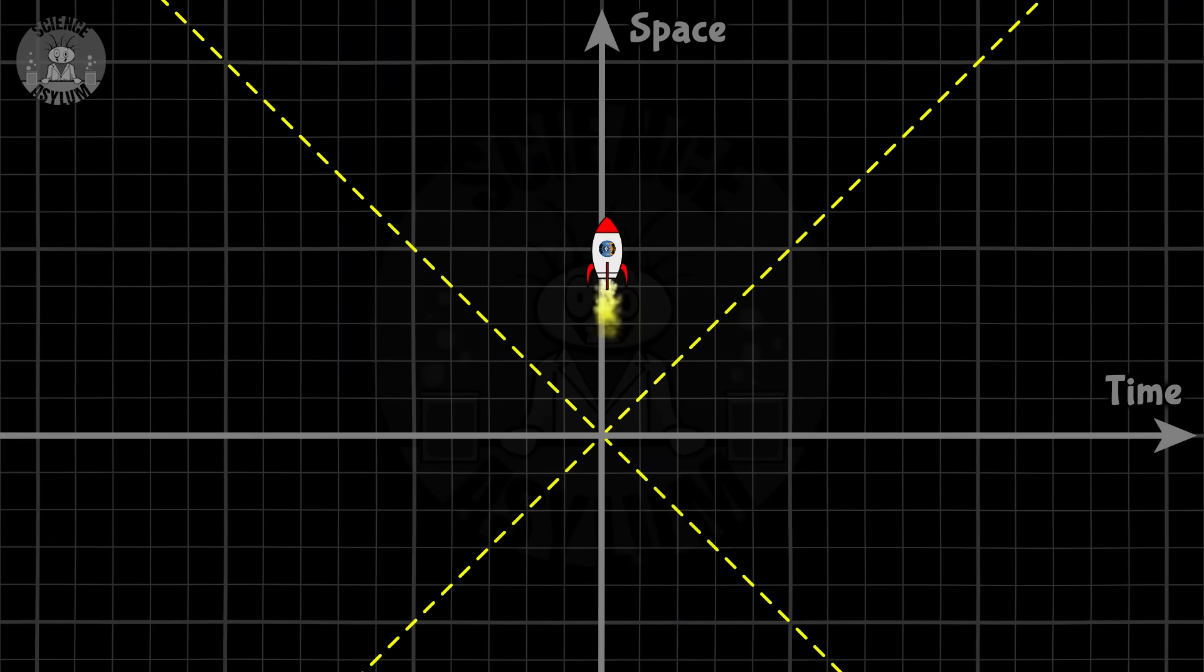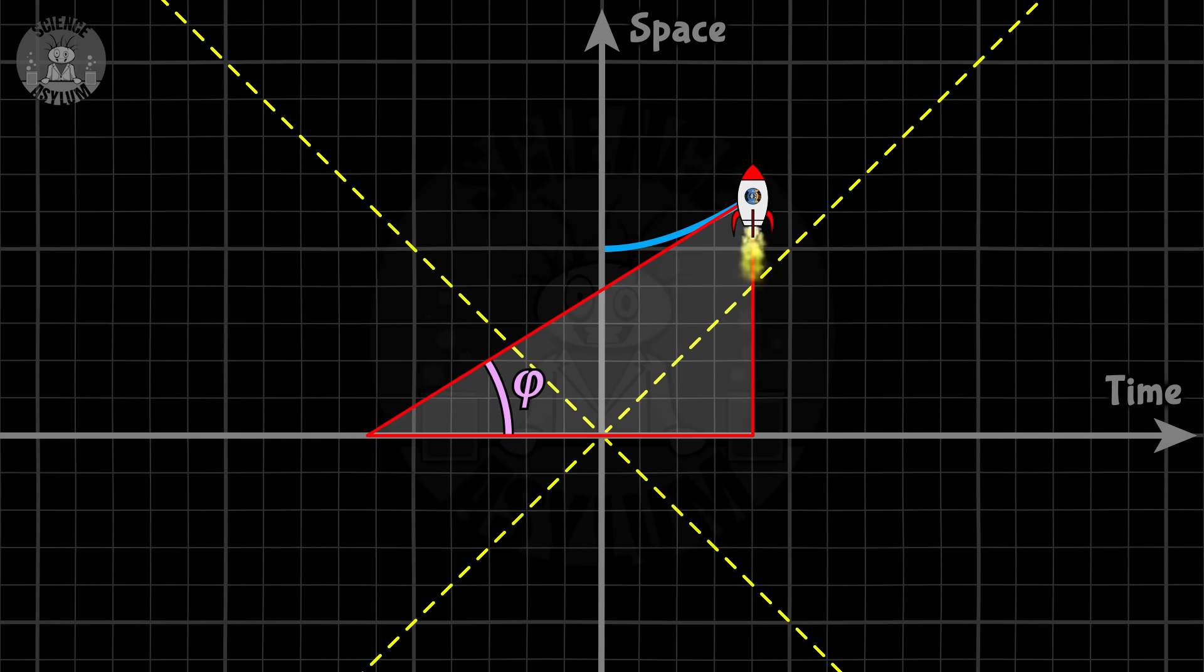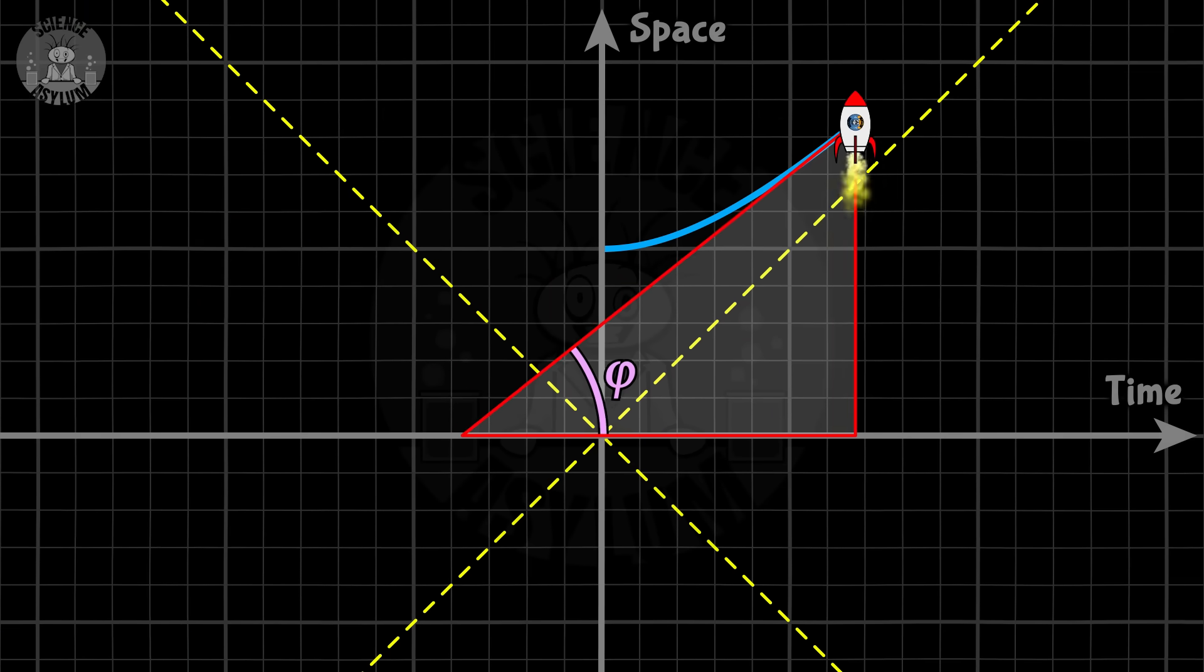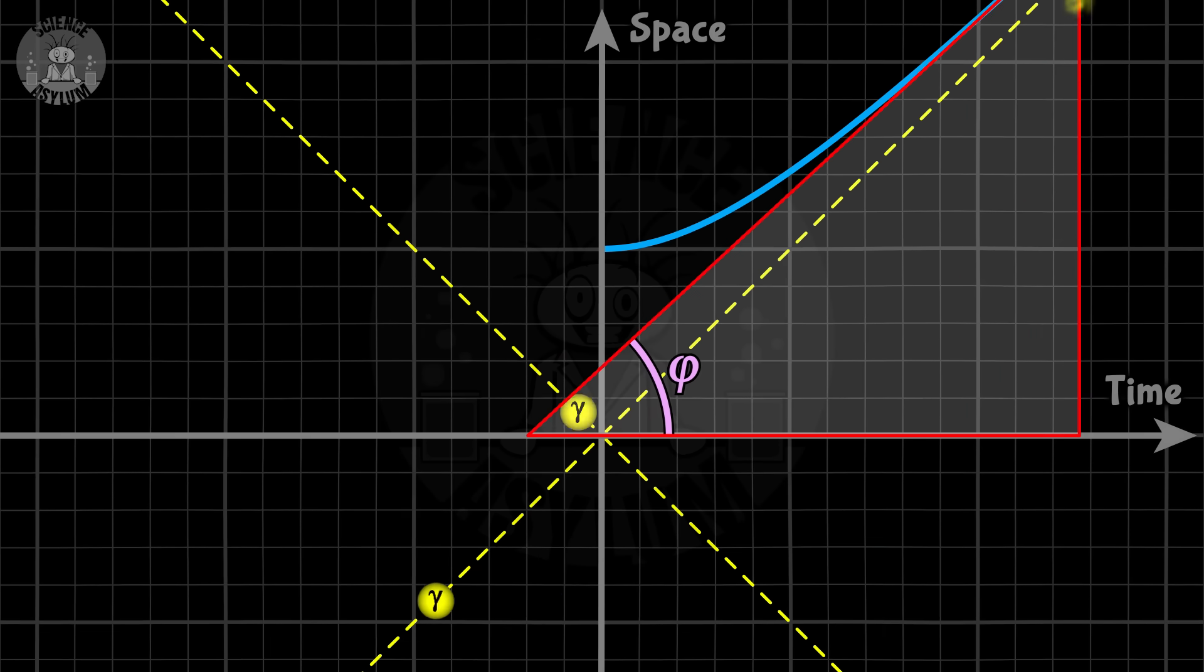But why is that constant an upper limit? Because hyperbolically, it's infinite. What, what, what?! I know, I know. It sounds crazy, but hear me out. Let's look at the rapidity instead. That's the angle with the horizontal. The faster the rocket goes, the bigger the rapidity gets, but only up to a limit, that asymptote, the path of light. That rapidity limit might look like 45 degrees, but it's not. Remember, this isn't Euclidean.